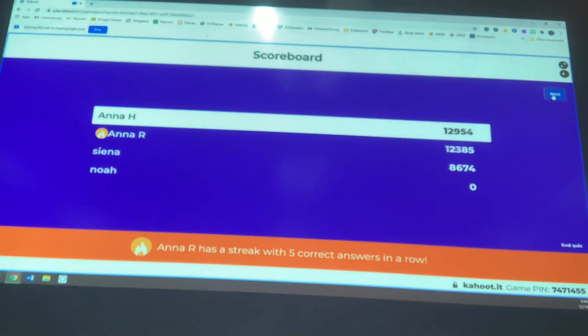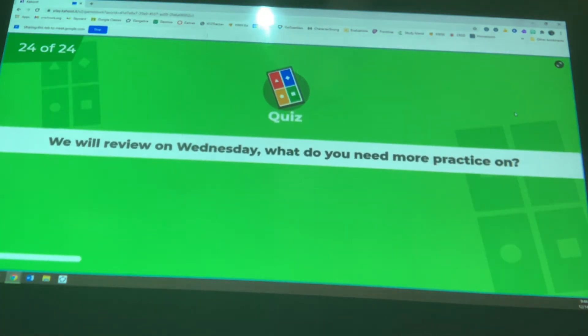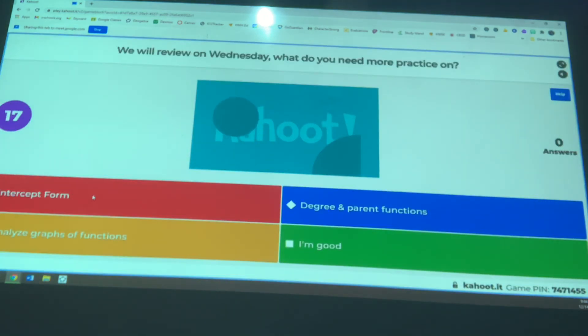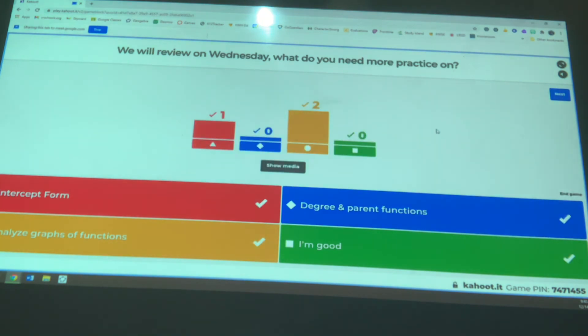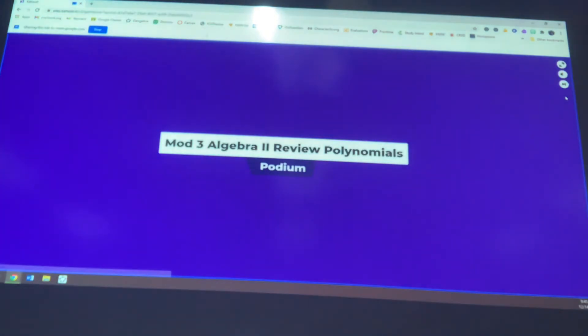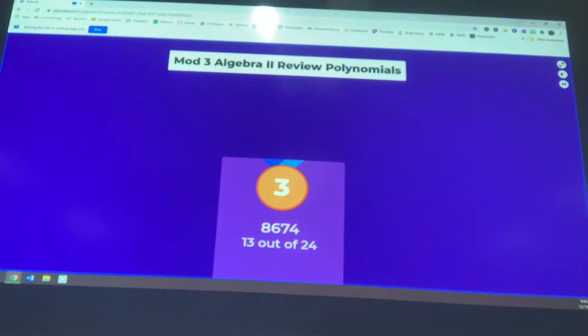Okay. That was a good review for Monday. Last question, just let me know. We'll have a review on Wednesday. So what do we need more practice on? Do we need more practice on intercept form? And looking at those x-intercepts, maybe more practice on degree and parent functions. Identifying the degree, this is a quintic or this is a quadratic. Maybe you need to look at some local minimums, maximums, or are you good? Analyze graphs and intercept form. Okay, awesome. So on Wednesday, I will have some questions to prepare for that.